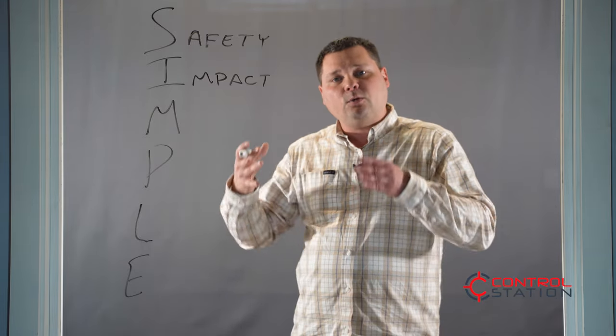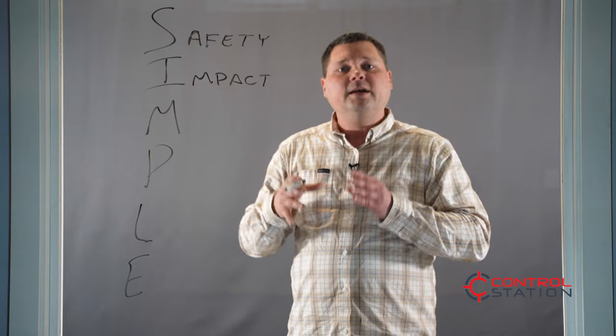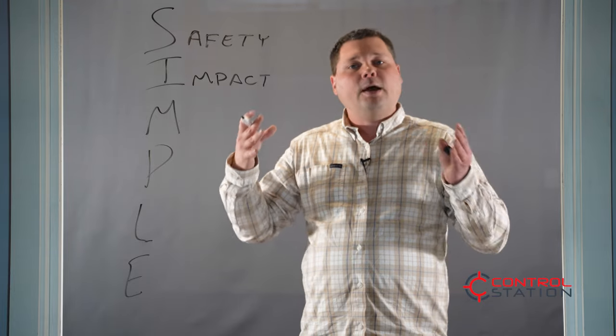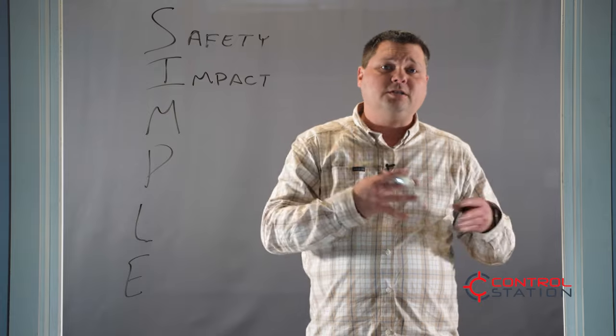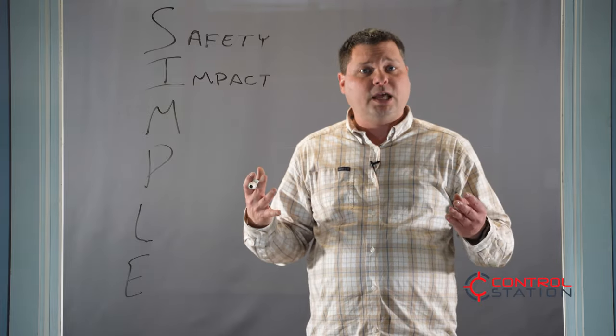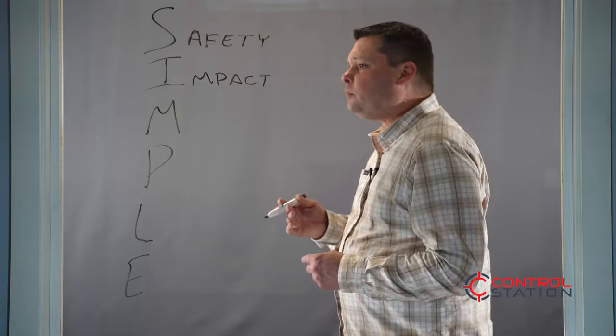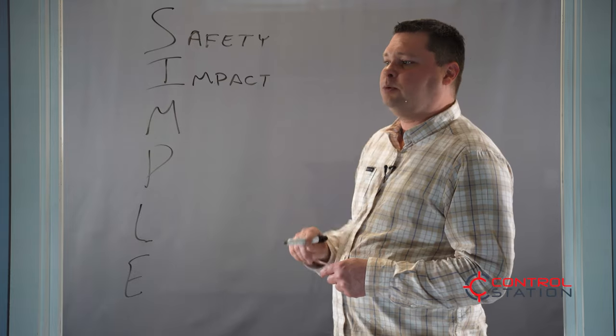So you need to understand where does this control loop fit in the big picture. When it responds too quickly, do other loops around it start to oscillate and become unstable as well? So you need to make sure that the impact is well understood.